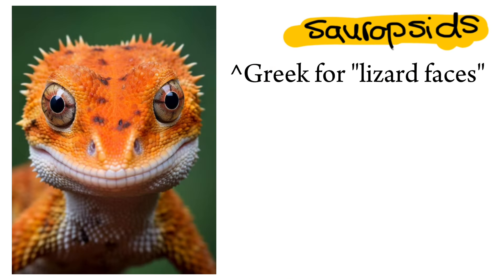The two main groups of sauropsids are the diapsids and the anapsids. So why is Dimetrodon, a synapsid, not a dinosaur, which is a diapsid? We'll compare it in this chart. The key difference between diapsids and synapsids is the number of temporal fenestrae in their skull. Anapsids have no temporal fenestrae, synapsids have one, and diapsids have two.